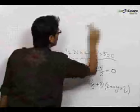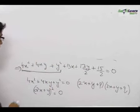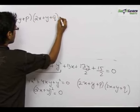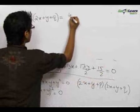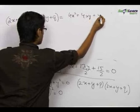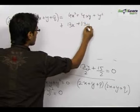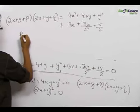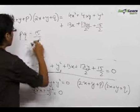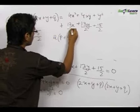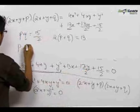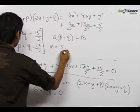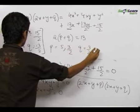Multiplying these two factors and comparing with 4x² + 4xy + y² + 13x + 13y/2 + 15/2 = 0, we get pq = 15/2 and the coefficient of x gives 2(p + q) = 13, so p + q = 13/2. Solving these two equations gives p = 5 and q = 3/2, or p = 3/2 and q = 5.